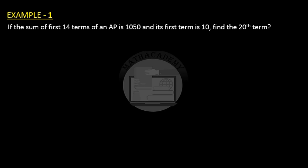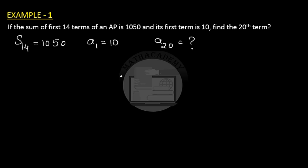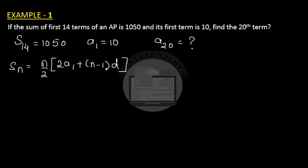Let us write down what is given: sum of first 14 terms, S(14), is 1050; the first term a1 is 10; and we have to find the 20th term, a20. We know the formula for S(n): S(n) = n/2 × (2a1 + (n−1)×D), where D is the common difference and a1 is the first term.